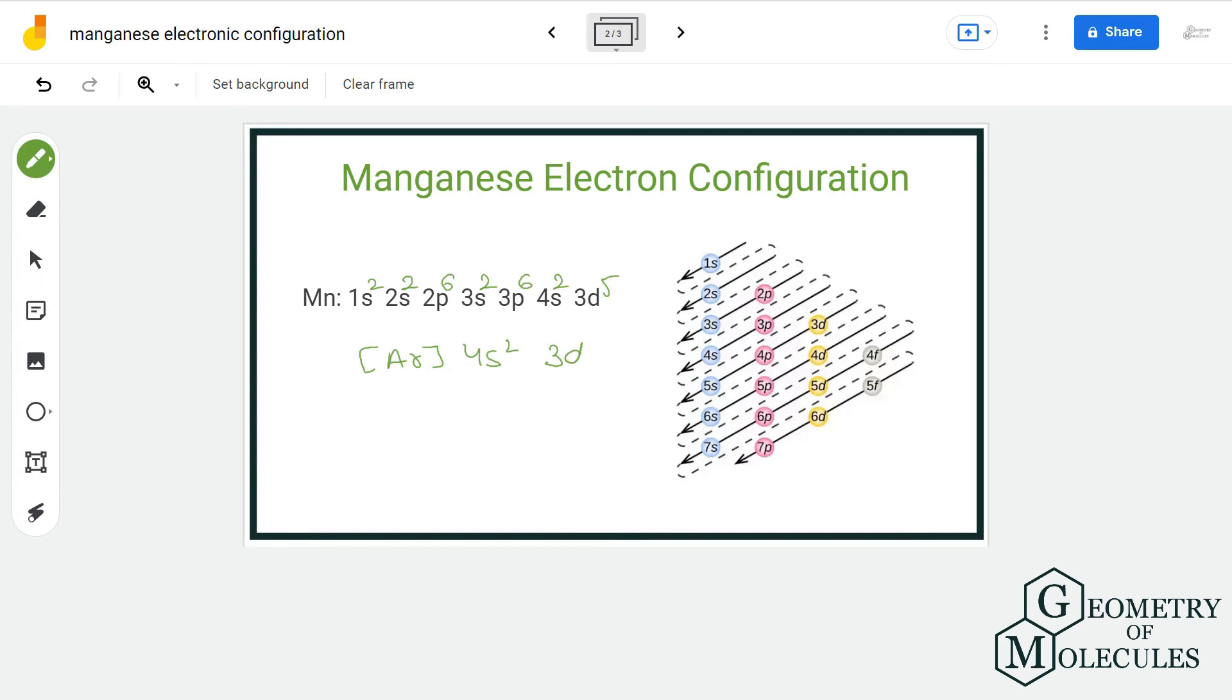Generally, what we do is we take the electronic configuration of the nearest noble element and put that into the bracket and then write the rest. So up to 3p6, the electronic configuration is of argon. So there are two ways of writing the electronic configuration and you can use either way.